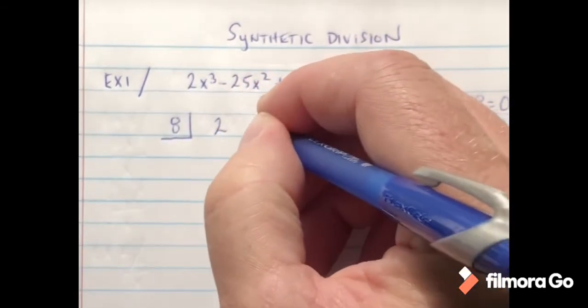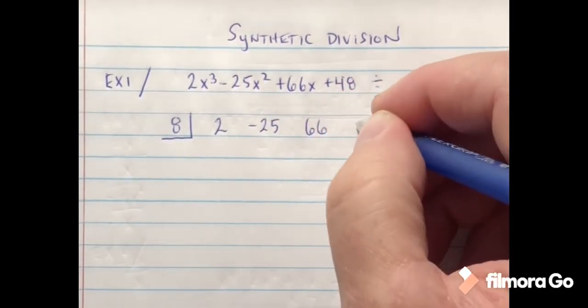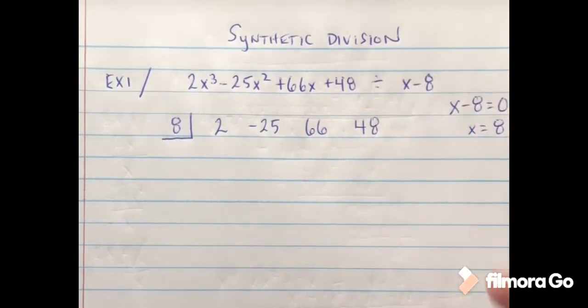And then a 48. Again, much like with long division, if I'm missing a degree you always want to put the number zero in there to hold that place value.